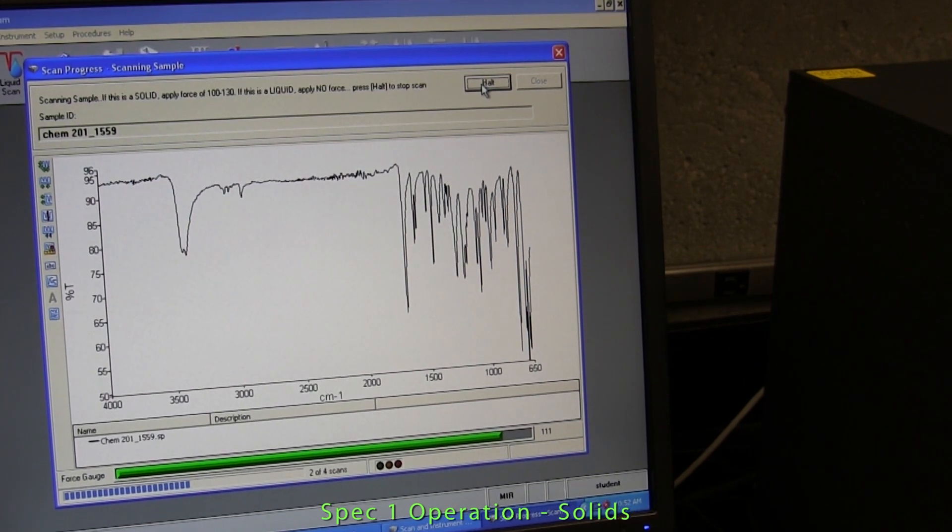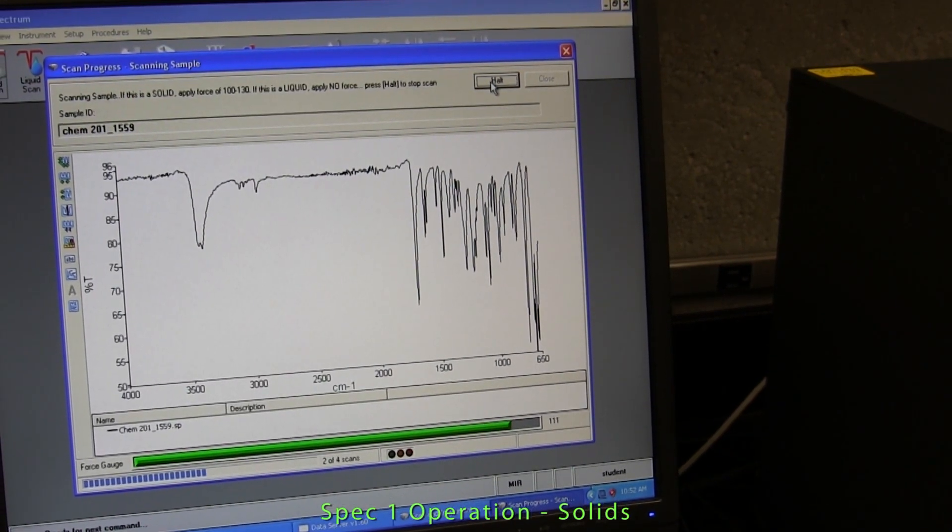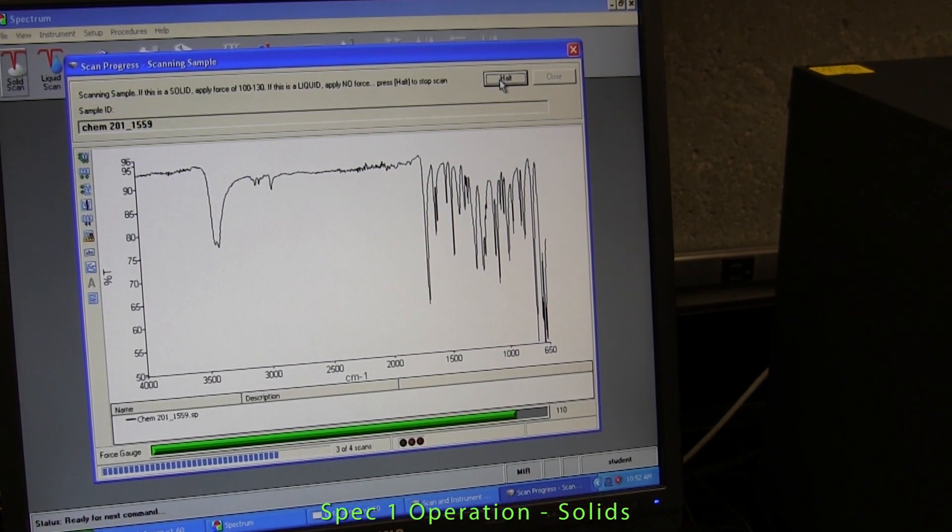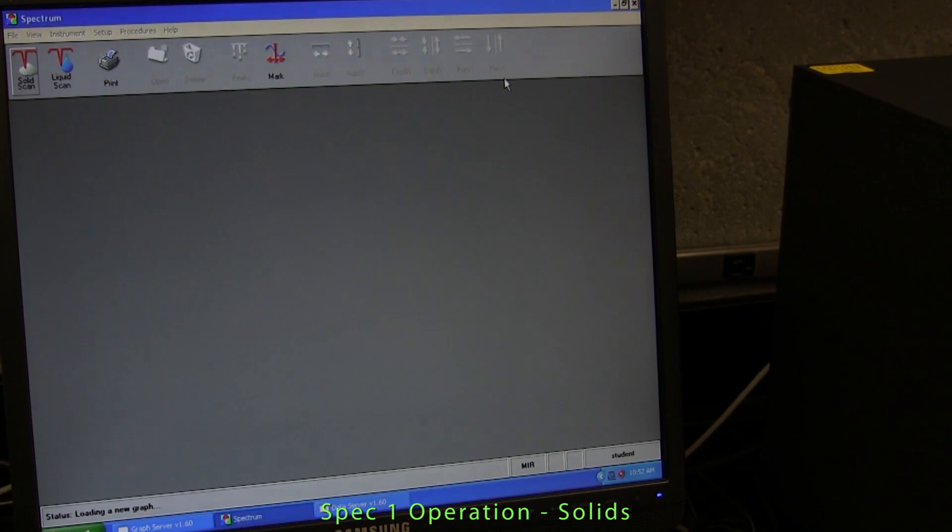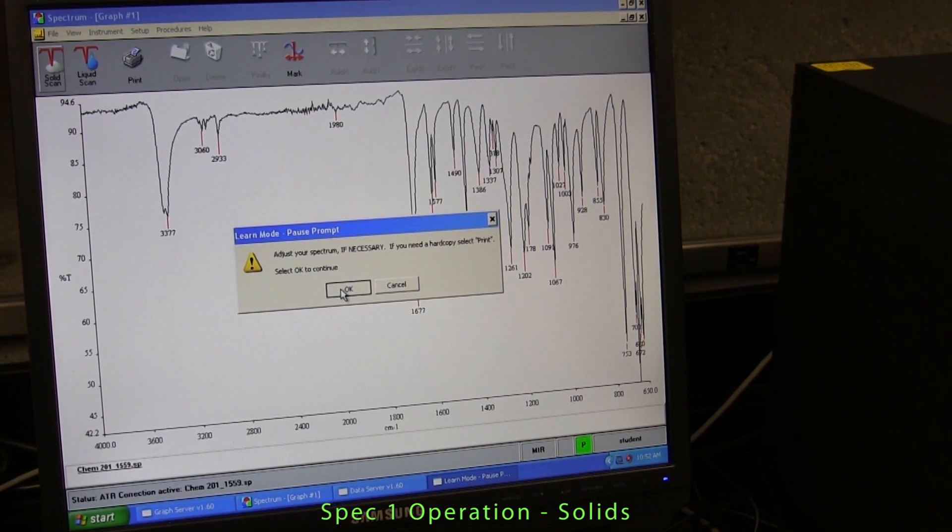In most cases, the spectrometer will scan the sample four times, which takes just a few seconds and then displays the average result of the four scans on the screen.